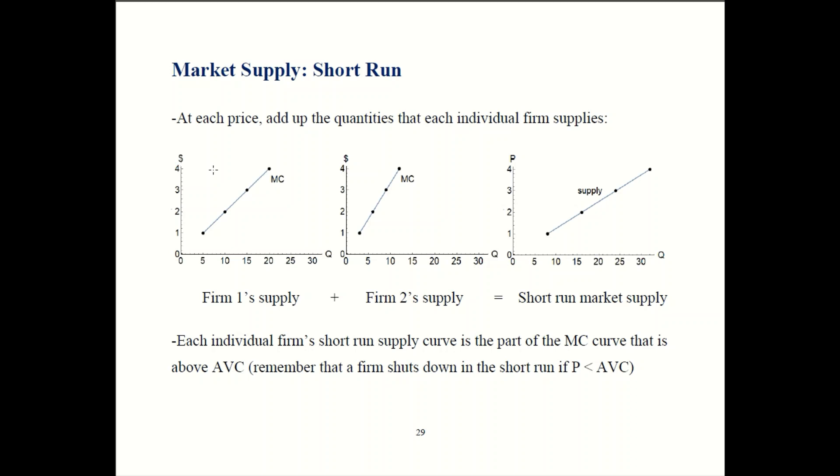So here if the price is four dollars, then firm one provides twenty units. At that same price, firm two provides about twelve units. So twenty plus twelve is thirty-two, so the market's supplying thirty-two units if the price is four. So you put that point on the graph over here.